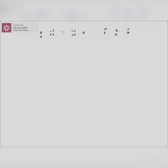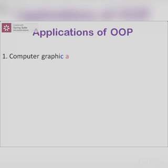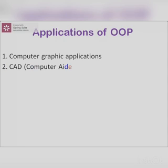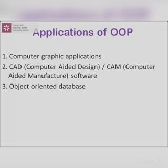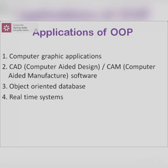The last topic in this session is applications of OAPs. The first one is computer graphic applications. The second one is CAD/CAM software — CAD means computer-aided design and CAM means computer-aided manufacture; OAPs can be used here as well. The third is object-oriented databases. The fourth is real-time systems — systems where parameters change every time, for example, in a thermal plant where temperature and pressure change constantly.